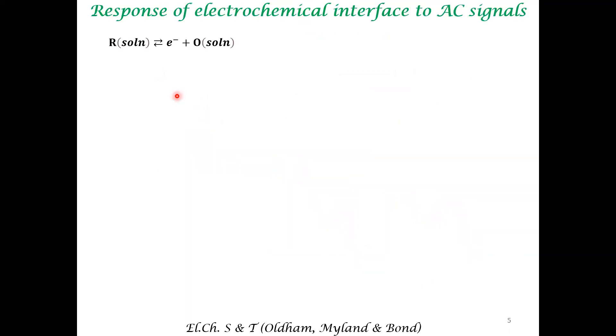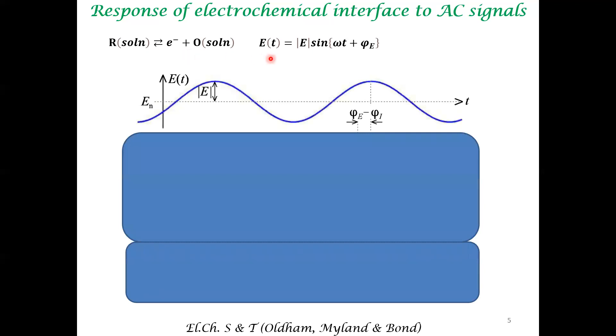So for example, when you take this typical model system which we have addressed many times in these lectures, you have reduced species, oxidized species. So if you impose an AC signal, this is a small variation. It's a small signal perturbation. So in response to this, you would see a small variation in concentration.